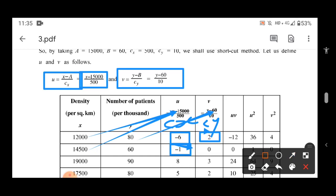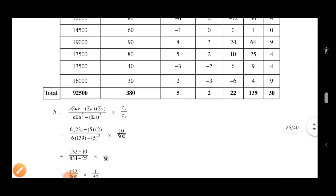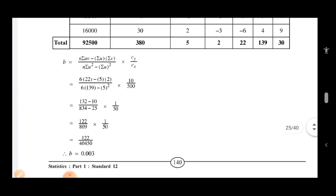Similarly for v, 80 minus 60 is 20 divided by 10, which gives 2. 60 minus 60 is 0. 90 minus 60 is 30 divided by 10, which gives 3. Continue like this to get all u and v values. Then find the total of u, v, u square. You need v square to find reliability, to find R square.